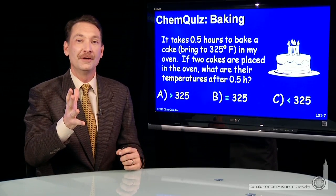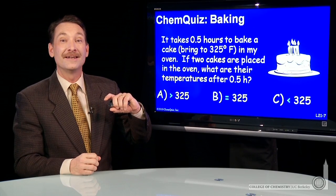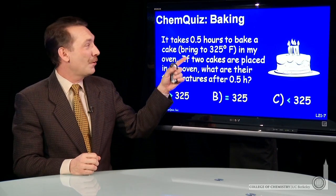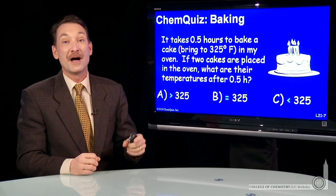We can apply our notions of heat flow to applications in the home. Let's say I'm going to bake a cake in my oven. And I know it takes half an hour to bring my cake to 325 degrees in my oven.